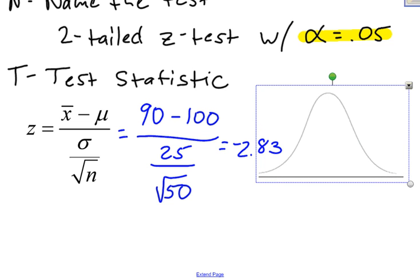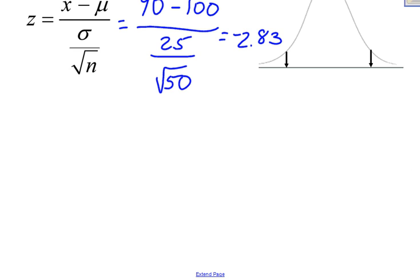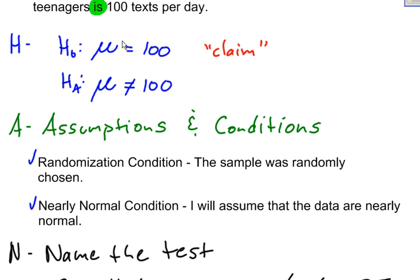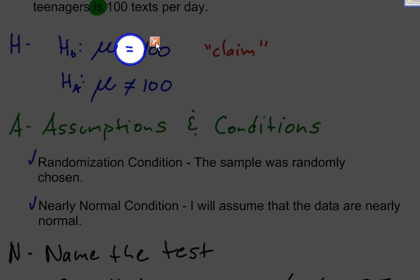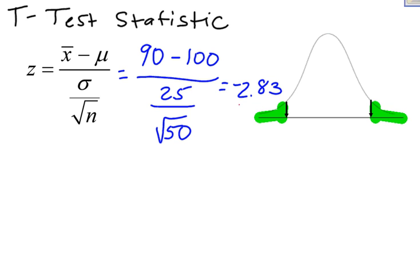Since this is a two-tailed test, I need to label 2.83 on both sides: negative 2.83 on the left and positive 2.83 on the right. My null hypothesis had an equal sign, so it's a two-tailed test. I need to find the area in both of these tails. I'll use my test statistic to find the area in one tail and then double it to get the area in both tails — that's how I find the p-value.